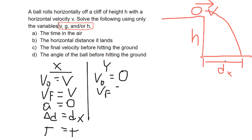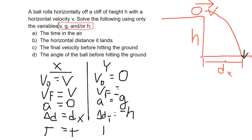Our V final in Y is unknown — that's the final velocity right before hitting the ground. Acceleration we know is negative G (using G as instructed by the problem). And delta D in the Y direction is H, but since we're below where we started, we'll make it negative H. Time again we'll call T.